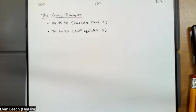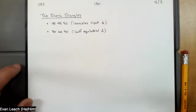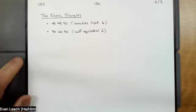The last thing we want to look at is the iconic triangles — the 45-45-90 triangle and the 30-60-90 triangle. The 45-45-90 is an isosceles right triangle, and the 30-60-90 is half an equilateral triangle. We want to learn the ratio of sides in each triangle because this gives us sine, cosine, and tangent of 30, 45, and 60 degrees.